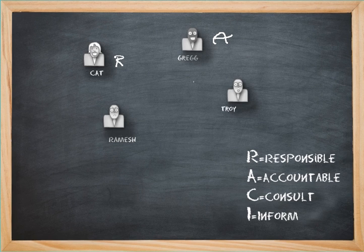Then we have Troy. He wants to be Informed, so we put an I next to him. What Inform means is that typically it's one-way communication of project status. So Troy may not be that involved with the details, but he certainly wants to be informed.